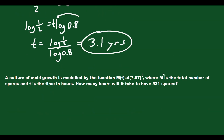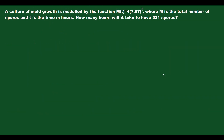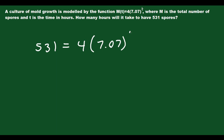Let's do the last question. A culture of mold growth is modeled by m(t) = 4 times 7.07 to the t, where m is the total number of spores and t is the time in hours. How many hours to reach 531 spores? Plug in 531 for m: 531 equals 4 times 7.07 to the t. The growth rate is over 600% every hour — mold grows very quickly.